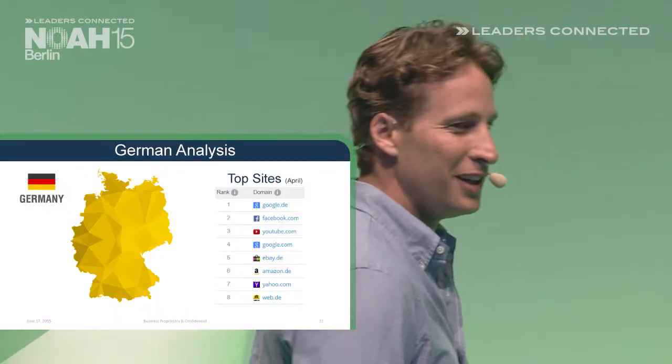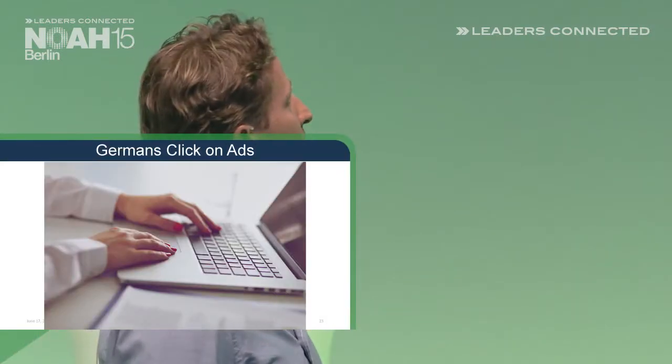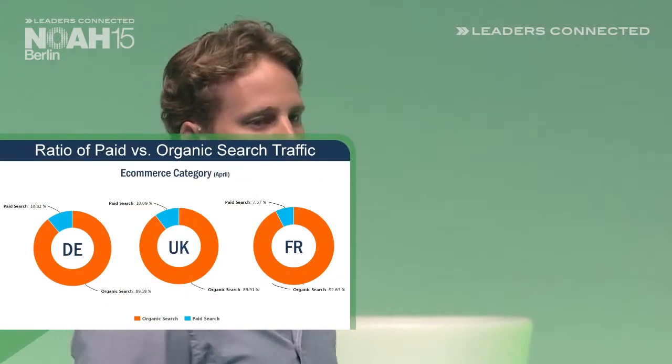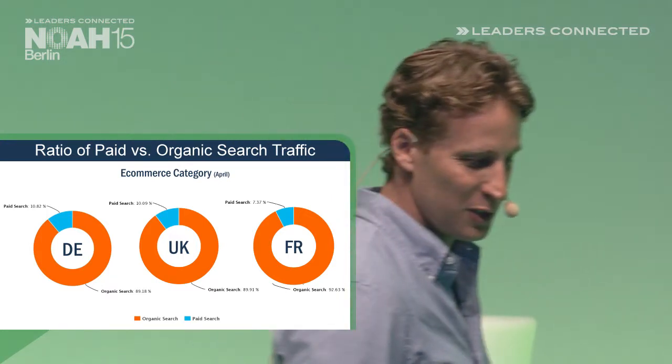Because we are here in Germany, I want to finish my presentation with some examples using our data to understand the German market. We put together a nice table of the top websites in Germany, and we found an interesting overview about Germans' love of clicking on ads. We put three pie charts representing the share of clicks coming out of Google between organic and paid clicks. In Germany, 10.8% of clicks from Google are paid, compared to the UK at 10%, while in France it's only 7.3%.